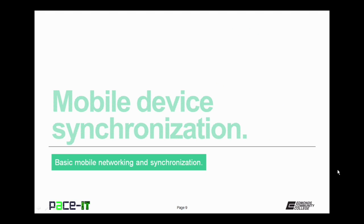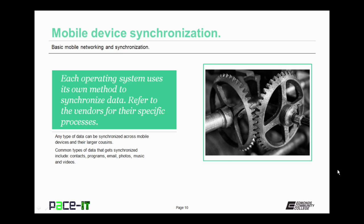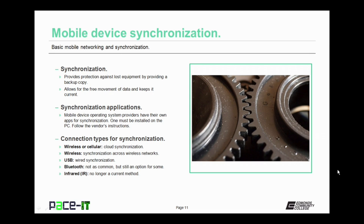Now let's move on to mobile device synchronization. Each operating system uses its own method to synchronize data, so refer to your vendor for the specific process. Almost any type of data can be synchronized across the mobile device to their larger counterparts and vice versa. Many people synchronize contact information, programs, email, pictures, music, and videos. Synchronization provides protection against lost equipment by providing a backup copy, and it also allows for the free movement of data and keeps it current. Mobile device OS providers have their own apps for synchronization, which must be installed on the PC — follow the vendor's instructions.